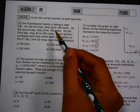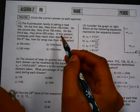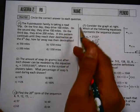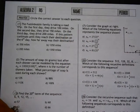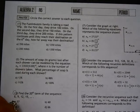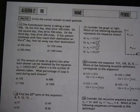The first one: the Fuzzin' Buzzin' family is taking a road trip. On the first day, they drive 100 miles. On the second day, 150. On the third day, 200. If this pattern continues until they reach their destination on the sixth day, how far away was their destination?